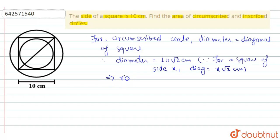So, this implies radii r is equal to 10 root 2 by 2 which will be equal to 5 root 2 cm. So, from this we can get area is equal to pi r square which will be equal to pi into 5 root 2 whole square that will be pi into 25 into 2 which will be 50 pi cm square.